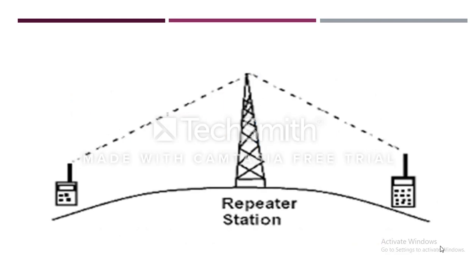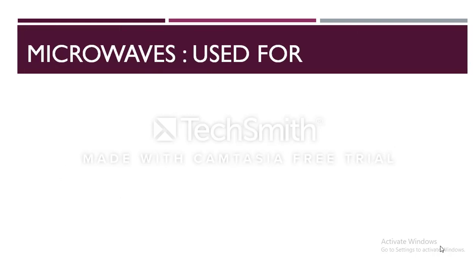In case of microwave transmission, the curvature of the earth, mountains, and other structures often block the line-of-sight. Hence, several repeater stations are required for long-distance transmission, thereby increasing the cost considerably. It is generally used for long-distance telephonic communications.